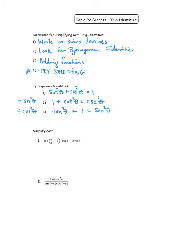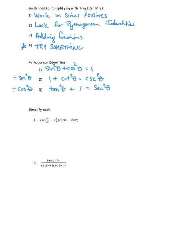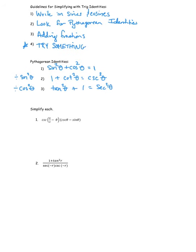Now I'm going to use those strategies to do some simplifying. For the first example, I see cosecant of (π/2 − θ) and I think about co-functions. Co-function is short for complementary functions — π/2 and θ are complementary angles that add up to 90. The complementary function to cosecant is secant, so cosecant of (π/2 − θ) becomes secant of θ. Then going back to my list, I'll write everything in sines and cosines.